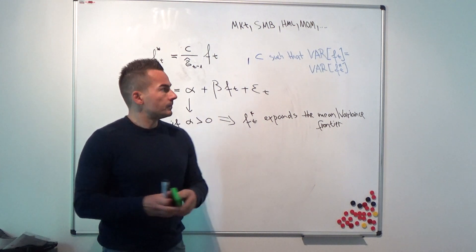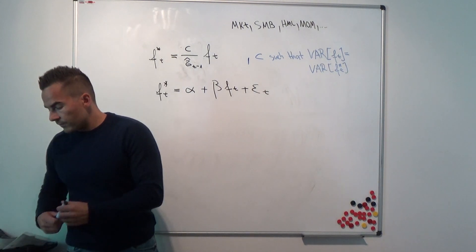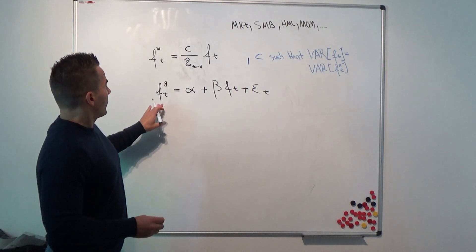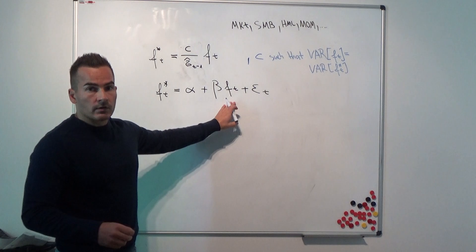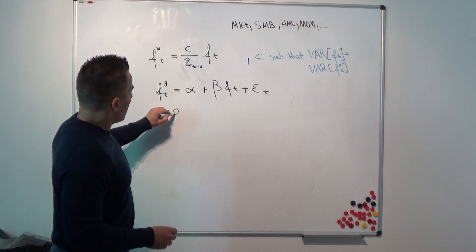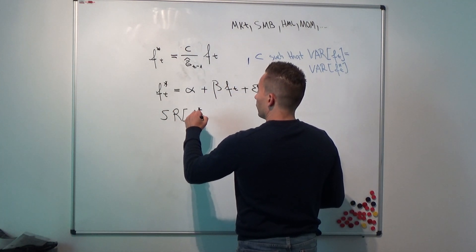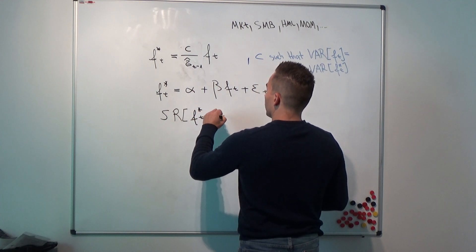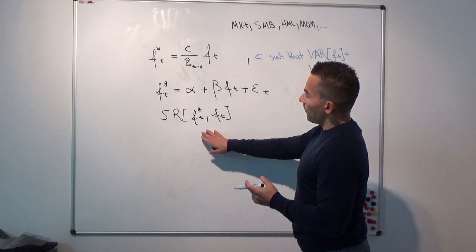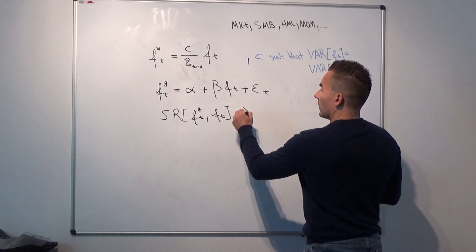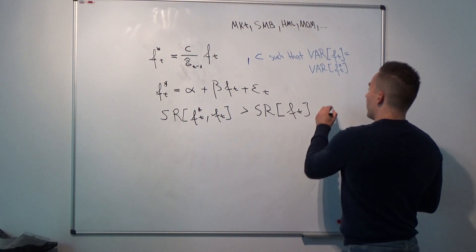What they argue is, first of all, you should not consider either the volatility-managed counterpart or the standard counterpart. What you should do is you should compare the Sharpe ratio of these two factors here is larger than the Sharpe ratio of the standard factor alone.